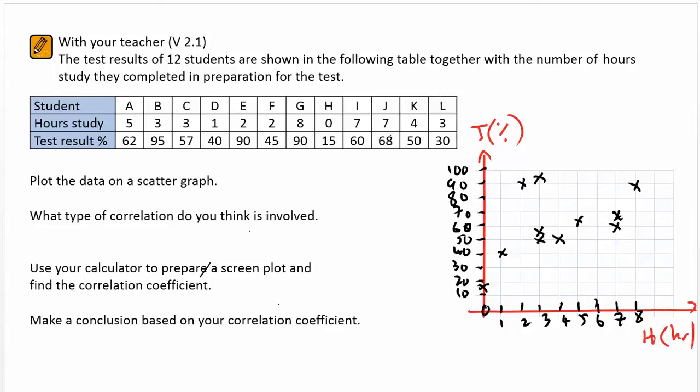Now in V2.1, we're going to look at how we can go from the data, sketch the data up, through to thinking about positive correlation that's involved, and then using the calculator to prepare the screen plot and find the correlation coefficient.